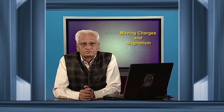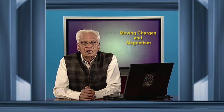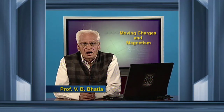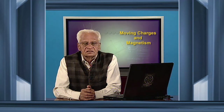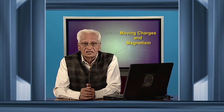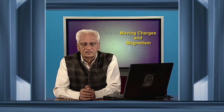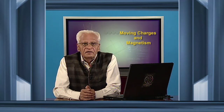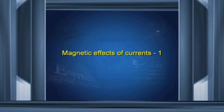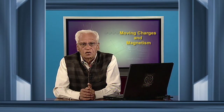In the last lecture, we dealt with Kirchhoff's laws. As you might know, these laws are an easy way to calculate currents, voltages, and resistances in the various components of an electrical circuit. Today, we start with magnetic effects of currents, and we shall find out the magnetic field of currents in various shapes.